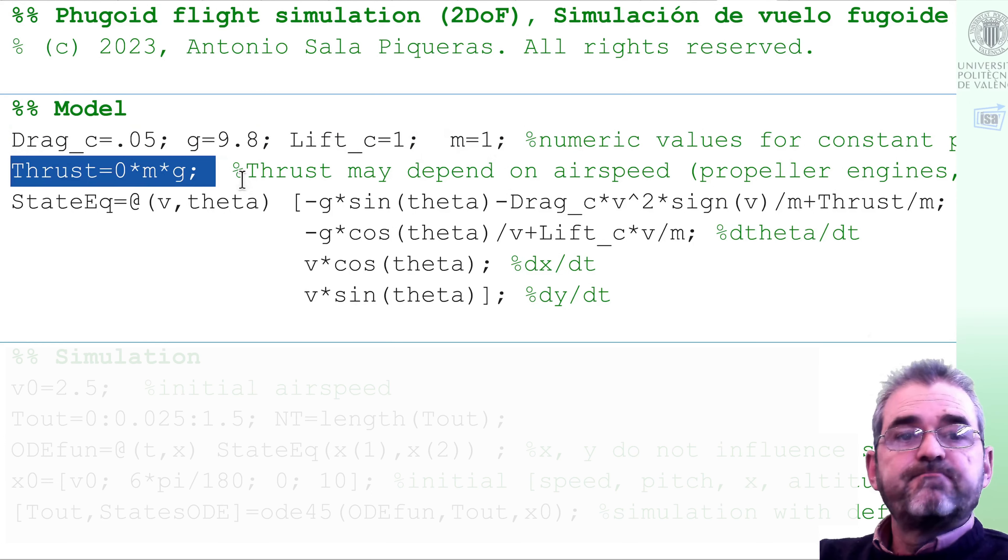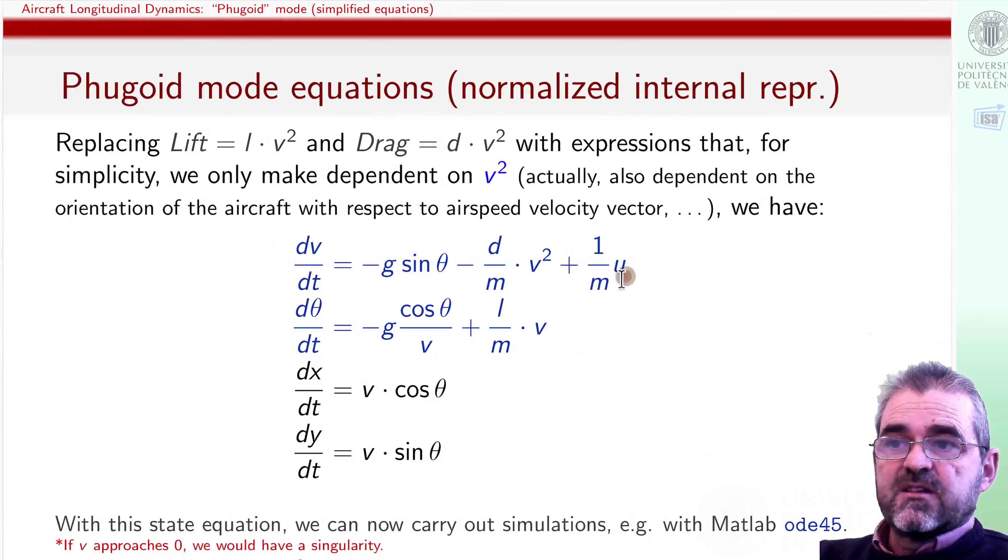We will also indicate which is the thrust, which we will assume it to be constant, even though this U may have velocity dependent terms, for instance in fixed power propeller planes. But we are dismissing that stuff in here to keep things simple.